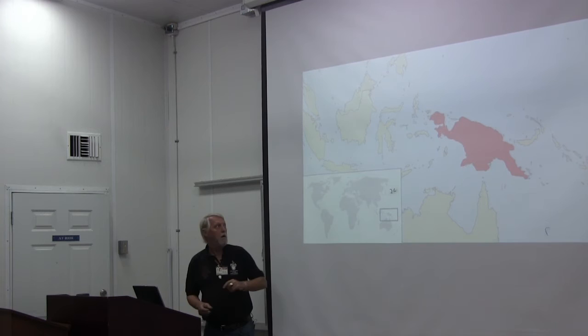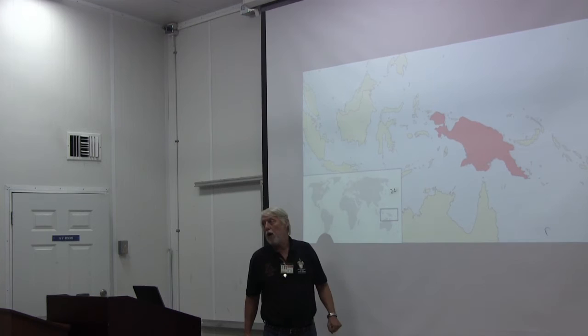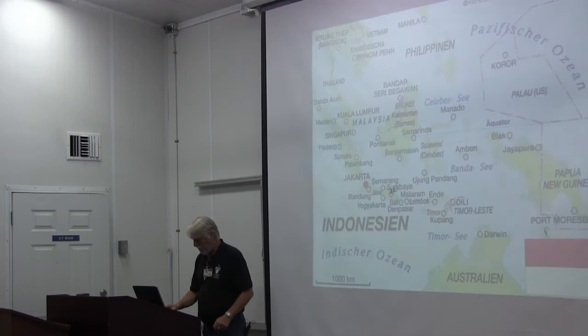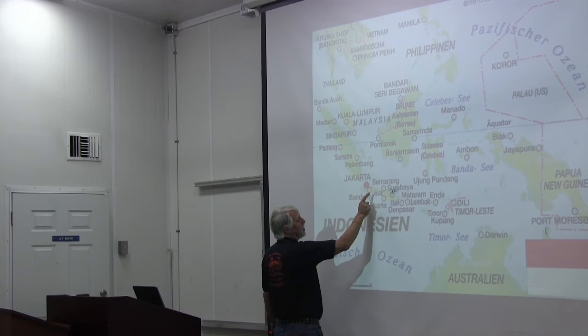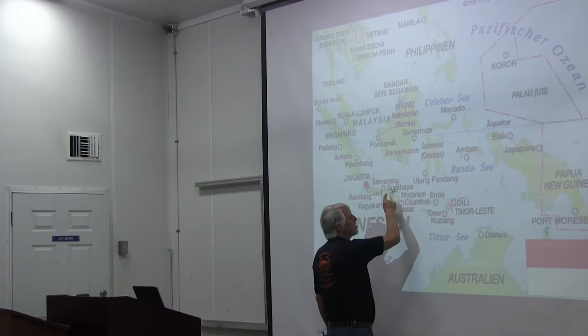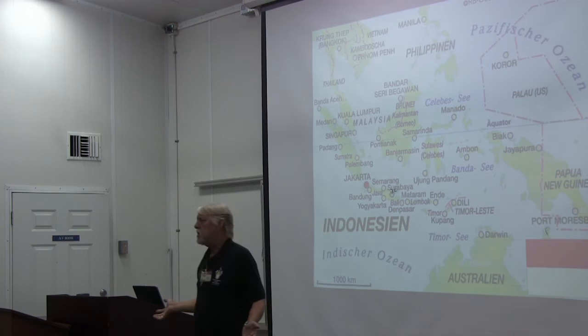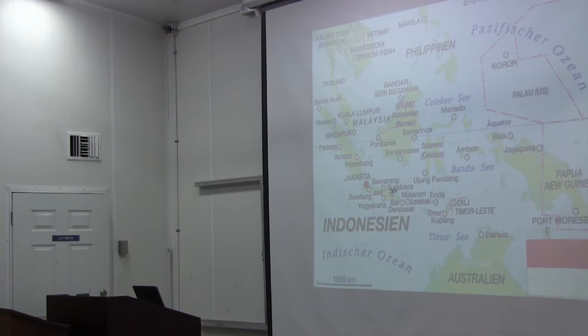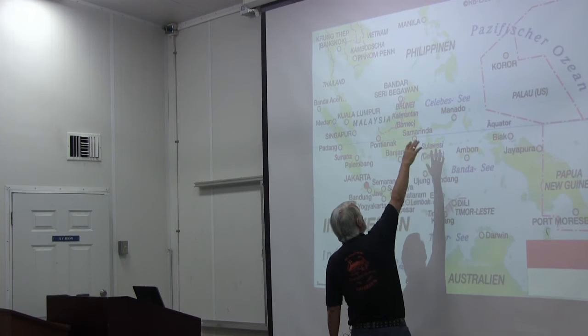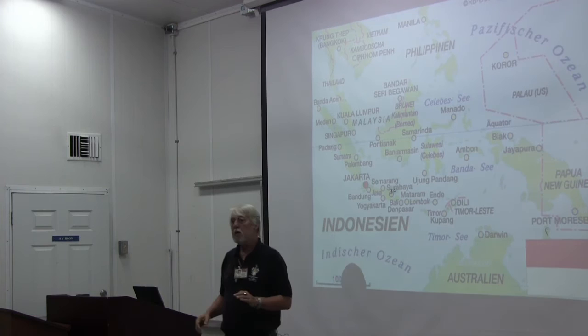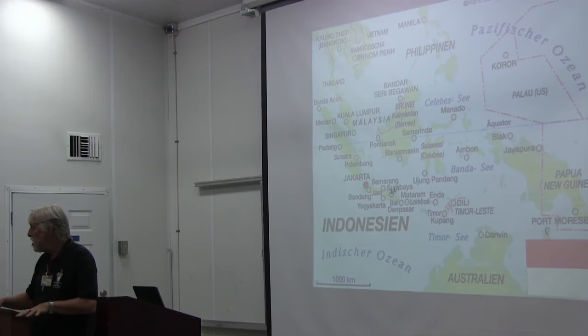Now we're going to look at the Sunda Islands — Sumatra, Java, Borneo, and a bunch of little islands that stretch out, commonly known as the Lesser Sunda Islands. It does not include Sulawesi or Celebes, nor does it include the Philippines. They are called the Sunda Islands because they lie on the Sunda continental shelf, so the seas around them are relatively shallow. I've approximately drawn the Sahul shelf (S-A-H-U-L), which is another continental shelf.